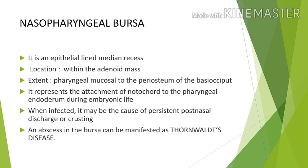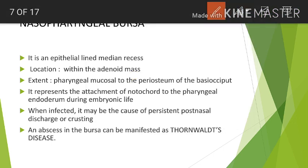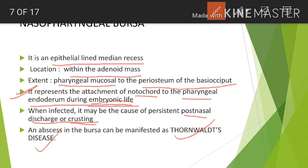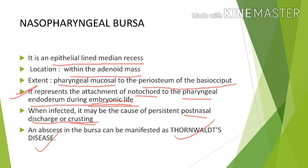The nasopharyngeal bursa is an epithelial-lined median recess found within the adenoid mass. It extends from the pharyngeal mucosa to the periosteum of the basi-occiput bone. It represents the attachment of the notochord to the pharyngeal endoderm during embryonic life. When infected, it may cause persistent post-nasal discharge or crusting, and an abscess in this bursa can manifest as Thornwaldt's disease.